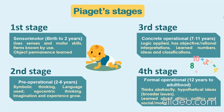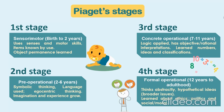Birth to 7 to 11 years: the concrete operational stage, where logic applies to objectives, rational interpretations develop, and children master conservation of numbers, ideas, and classifications. Birth to 12 years through adulthood: the formal operational stage, where children think abstractly, engage with hypothetical ideas and broader issues such as ethics, politics, social, and moral issues, which they begin to explore.